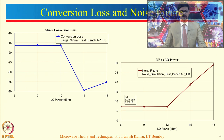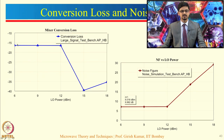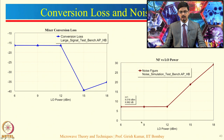Looking at conversion loss and noise figure: we get a conversion loss of around 16 dB for LO powers from 6 dBm to 12 dBm, after which the conversion loss increases, which is undesired. This graph shows the effect of LO power on conversion loss performance. The noise figure from the circuit is around 7 dB, and as LO power increases beyond 12 dBm the noise figure also increases. So LO power is a critical component — it affects both conversion loss and noise figure performance.